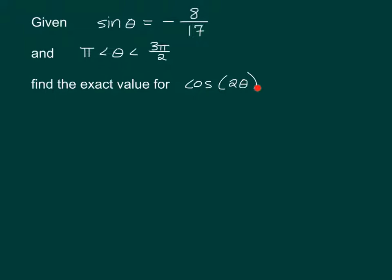They are asking for cosine 2θ, so we don't have to mess with this. You could if you wanted to, but you don't have to. We know sine, so we are going to use the fact that cosine 2θ is 1 minus 2 sine squared θ. So, it is 1 minus 2 times negative 8 seventeenths squared. What is my answer? 161 over 289? Yes. Boom.